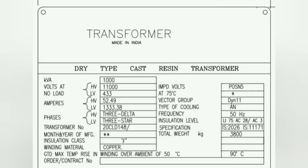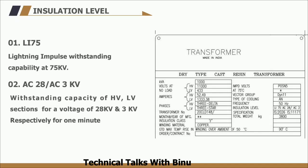The next parameter is the insulation level, written as Li75, AC28 bar AC3. Li75 means the HV winding lightning impulse withstand voltage is 75 kV. Impulse tests are normally performed on transformers to check insulation levels. AC28 bar AC3 means the continuous withstanding capacity of the transformer for a high voltage of 28 kV on the HT side and 3 kV on the LT side respectively, for a continuous duration of 60 seconds.